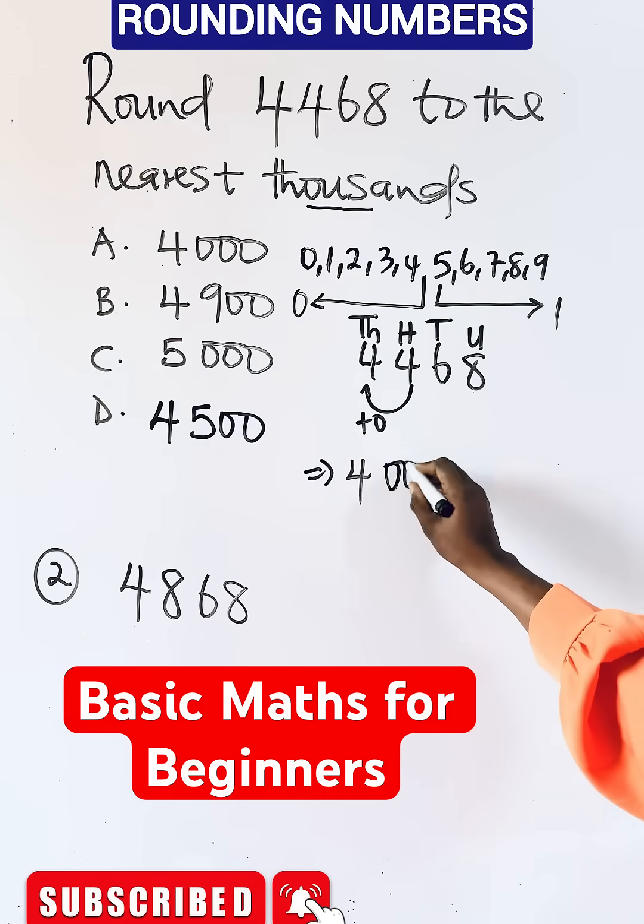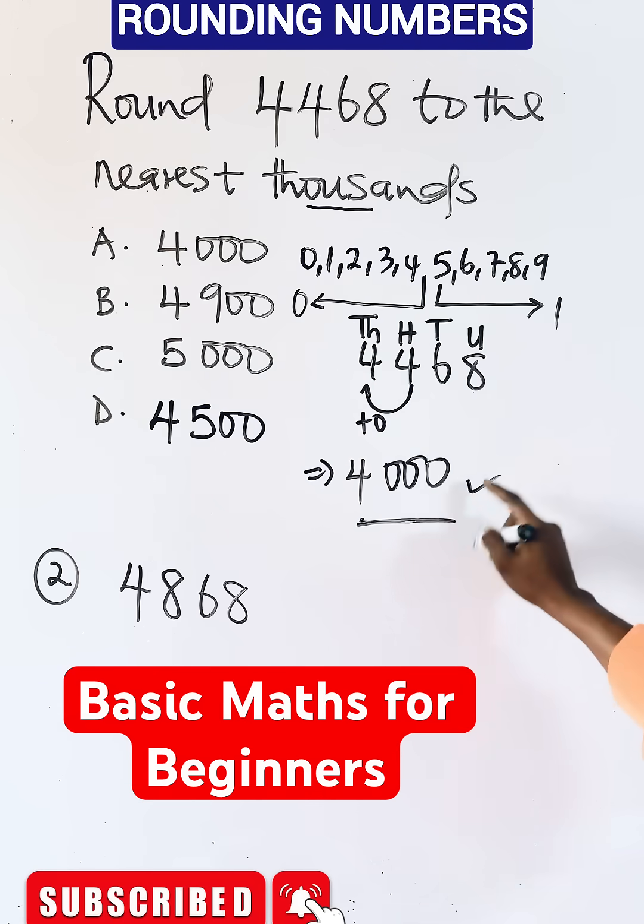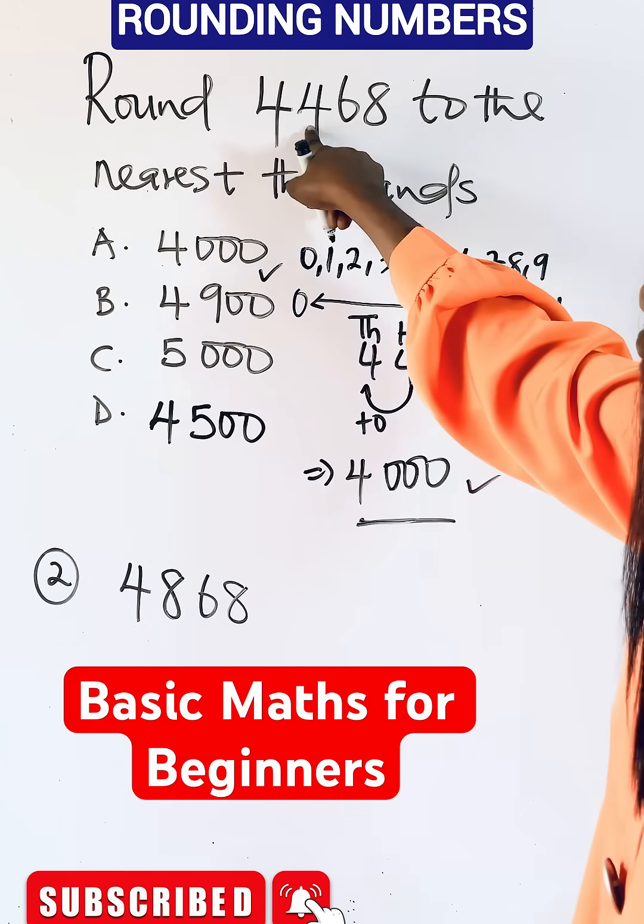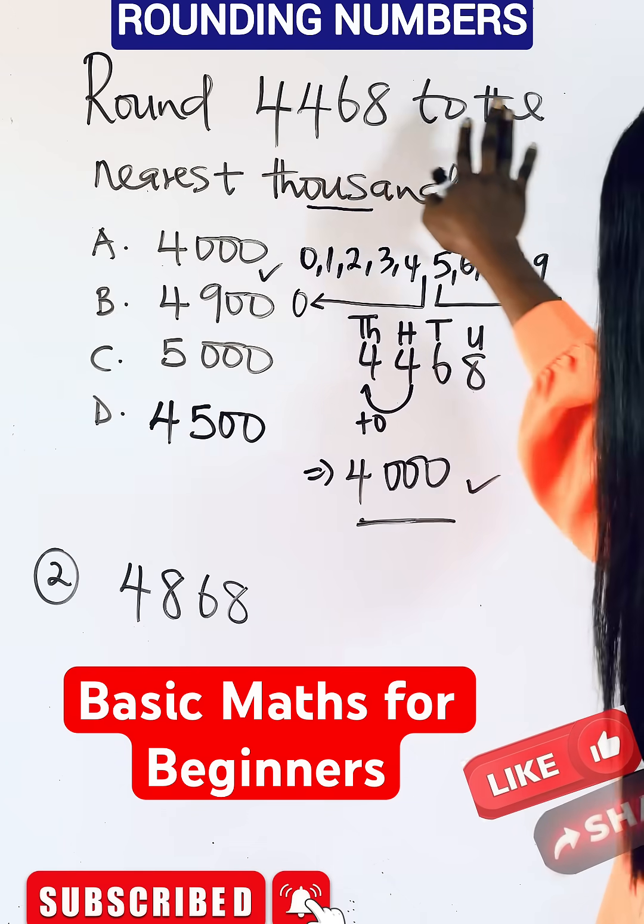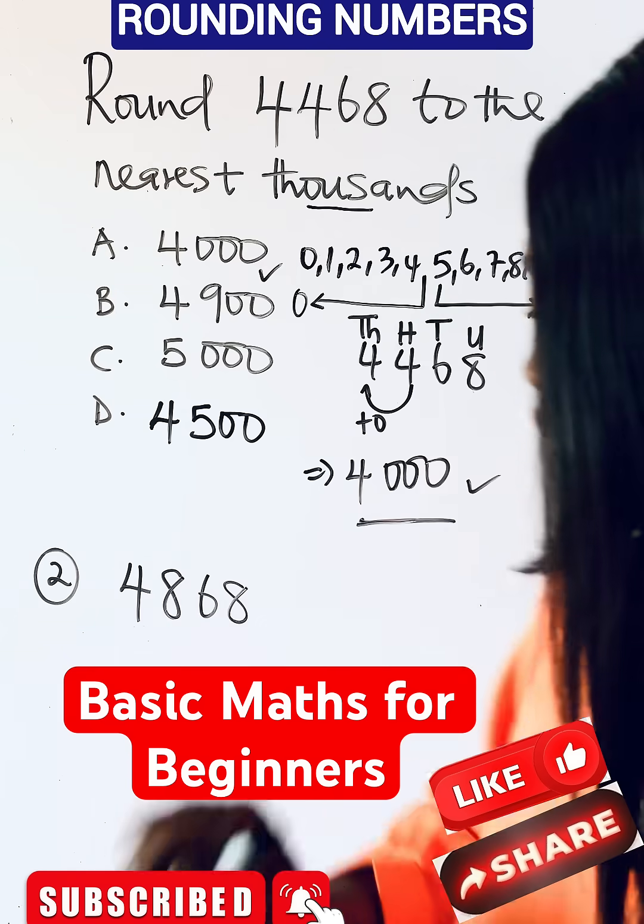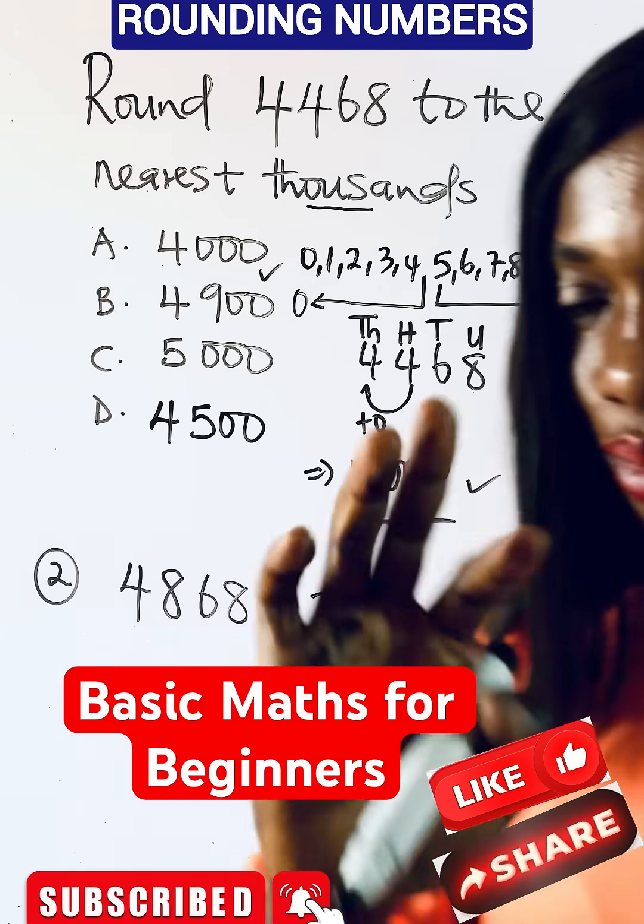And this becomes your answer, which is option A. Remember, 4468 is far away from 5000, and this is your correct answer. If this helps you, don't forget to give us a like. Bye!